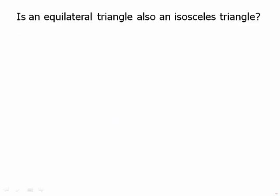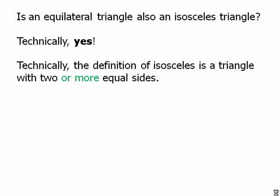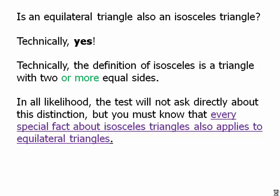Is an equilateral triangle also an isosceles triangle? Technically, yes. The definition of isosceles is a triangle with two or more equal sides. In all likelihood, the test will not ask directly about this distinction, but you must know that every special fact about isosceles triangles also applies to equilateral triangles. That's important to know.